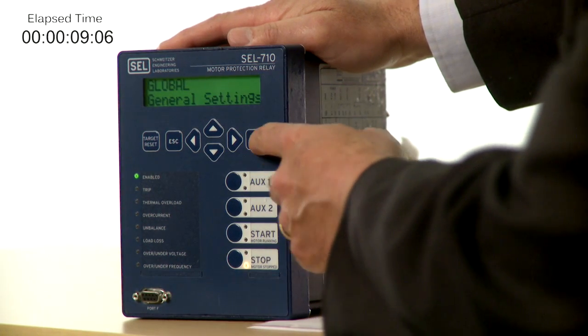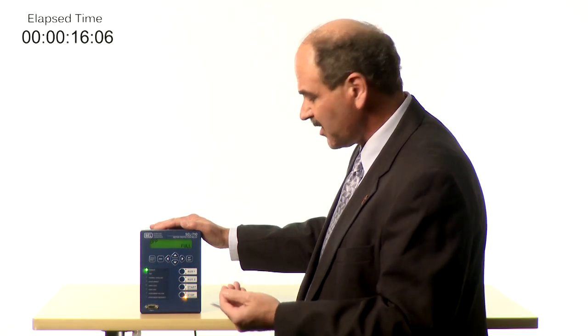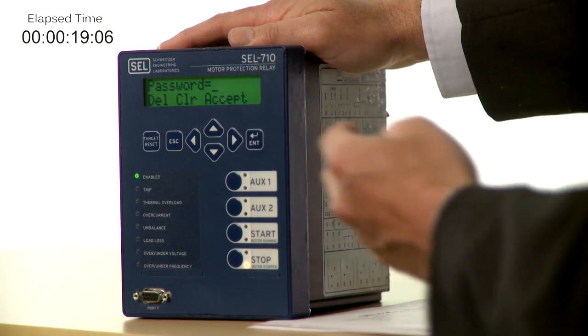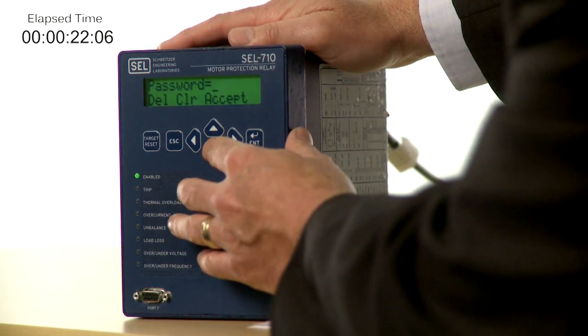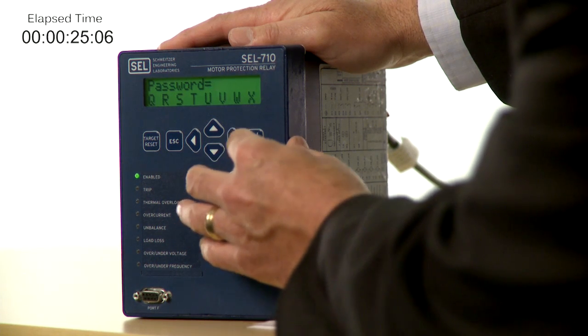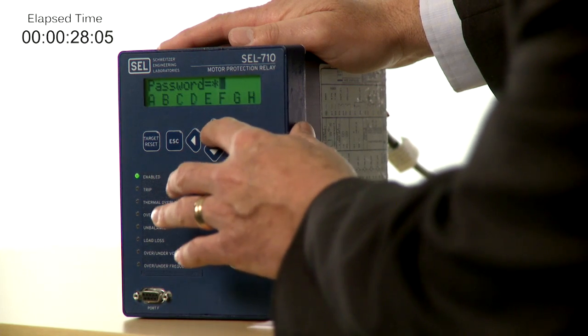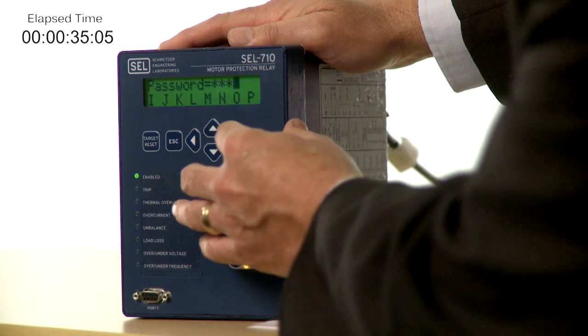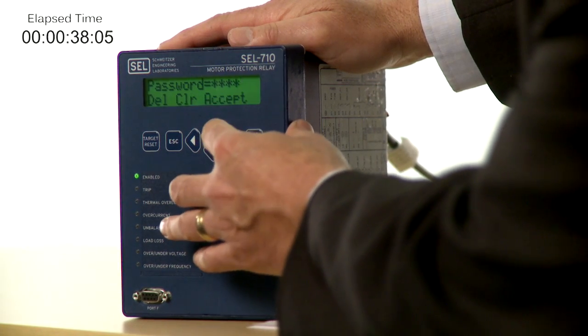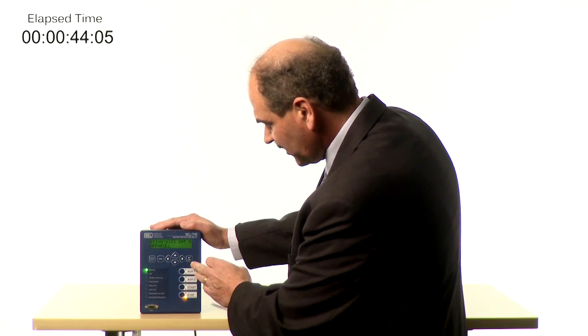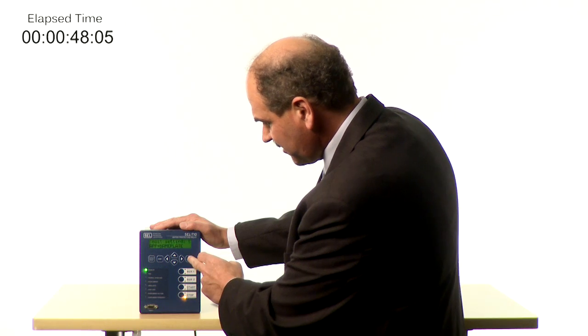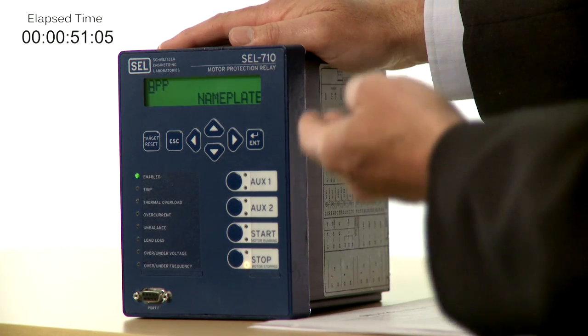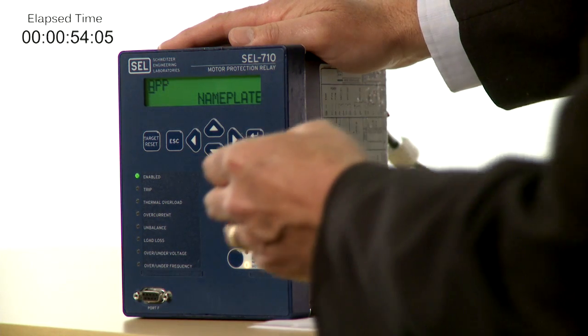And I'm going to change some of those global settings. So the first thing I'm going to do is change the application from a full protection application to a nameplate, which is a more condensed application setting. But the first thing I need to do is enter the password. Okay, now that I've entered the application password, I can now change the settings in the relay. So it's currently set for a full application, and I'm going to change that to nameplate. So now I've changed the application to nameplate settings, and we'll go through and update all of the settings for our nameplate application.